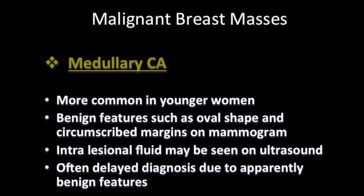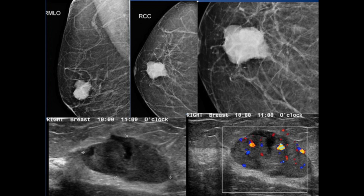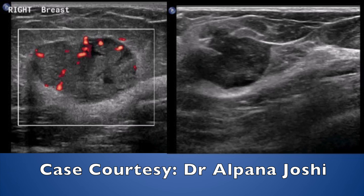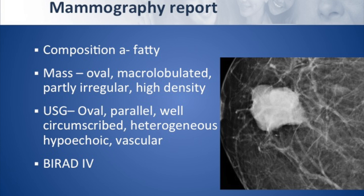The fourth variety is medullary carcinoma, which is most commonly seen in younger women. They present as a benign mass on mammogram showing features such as oval shape and circumscribed margins. Ultrasound may show intralesional fluid. These apparently benign features can delay the diagnosis of these masses.